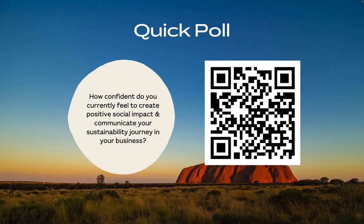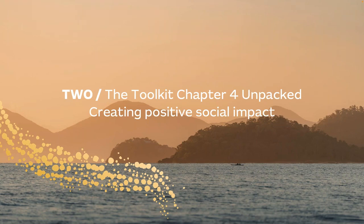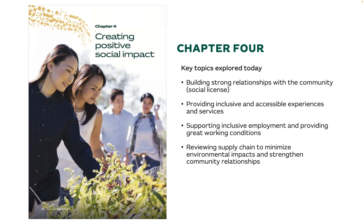These surveys are really useful for us to see where you are and how we can potentially help in the future. Let's jump into chapter four of the toolkit — creating positive social impact — and how your business can be a force for good in your community. How you operate your business can create positive impacts beyond the services and experiences you deliver to visitors. Key topics include building strong relationships with your community, that social license, providing inclusive and accessible experiences, supporting inclusive employment and reviewing your supply chain.